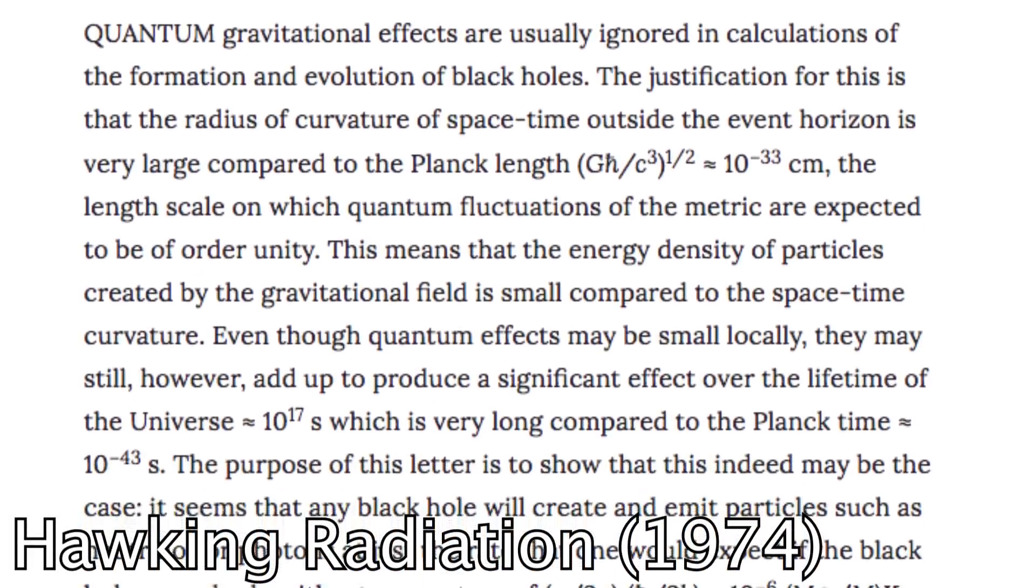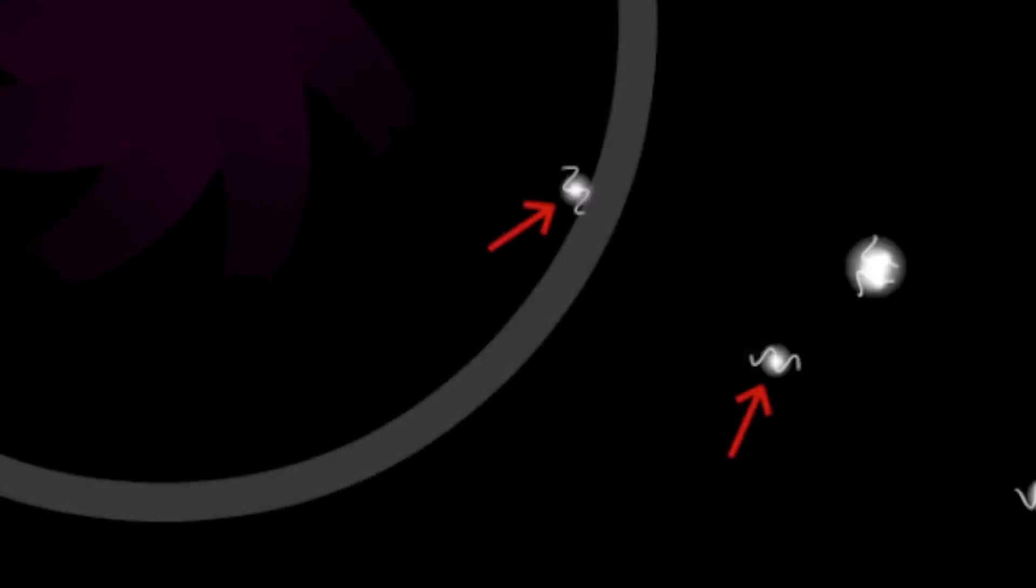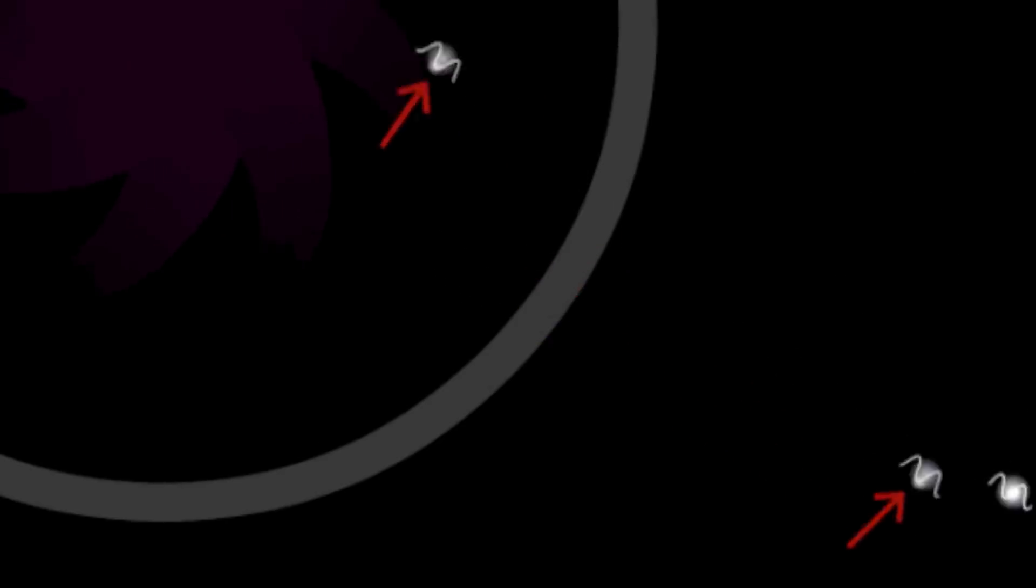The common explanation for this is that pairs of particles, including both matter and antimatter, exist throughout our universe, appearing and then destroying each other constantly. But around a black hole, occasionally one particle will be lost to the event horizon while the other escapes. The particle that escapes takes some extra energy with it, which is given up by the black hole, in turn causing the black hole to slowly lose its mass.